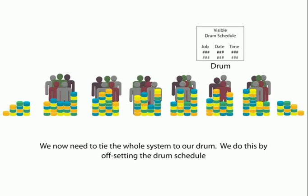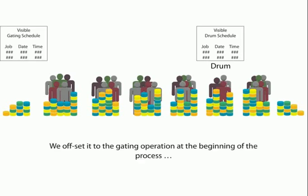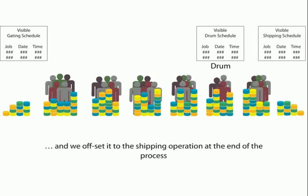After having made a detailed schedule or a plan to exploit the drum — what will be made and what will not — we need to tie the whole system to our drum. We do this by offsetting the drum schedule. The drum cannot work independently; somehow the whole system needs to synchronize itself with the drum. So we take the schedule at the drum that we have made after a lot of hard work and we offset it. Offsetting means you take a bit of time off and put a gating schedule. We offset it to the gating operation at the beginning of the process, which is a gating schedule — and this offset is what we call a time offset.